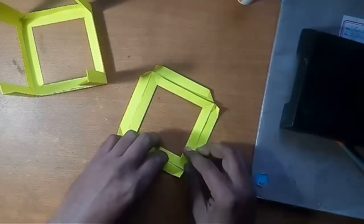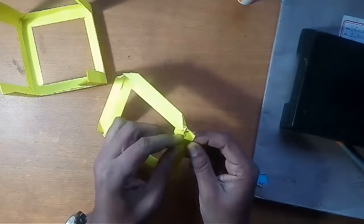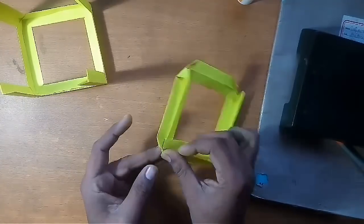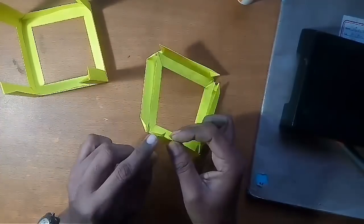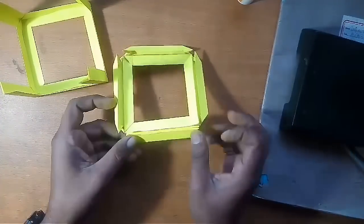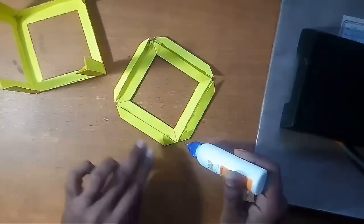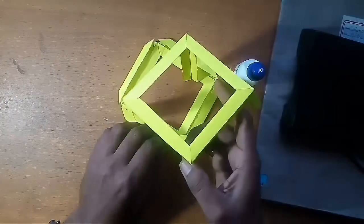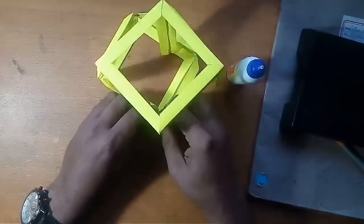Take another square and insert all the triangles inside. And fix all the 4 strips vertically in this square also.